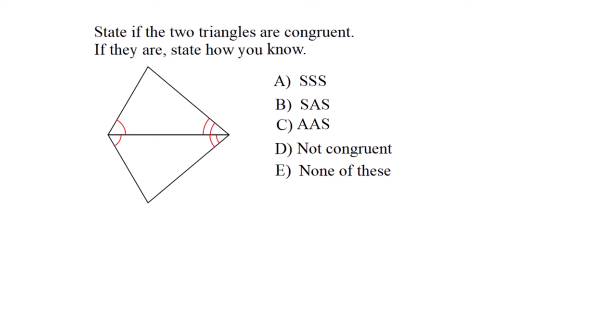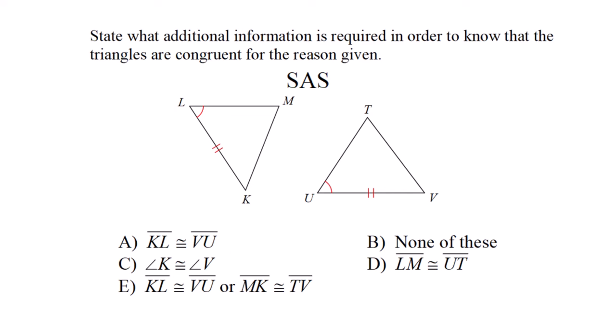State if the two triangles are congruent. If they are, state the theorem. These two angles are congruent, and those two are congruent, so we have two angles. Between the congruent angles, the triangles share a side. It's angle side angle, which is none of these options.